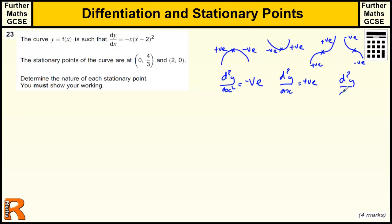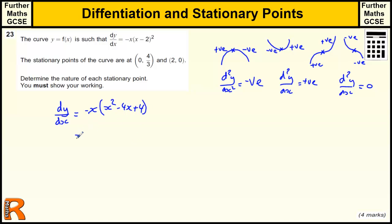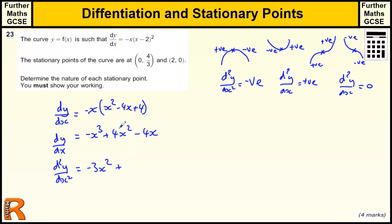With this function, I need to multiply it out before differentiating again. We have minus x times (minus x minus 2) squared, which is x² minus 4x plus 4. Multiplying that out gives minus x³ plus 4x² minus 4x. Differentiating that gives us the second derivative d²y/dx² equal to minus 3x² plus 8x minus 4.